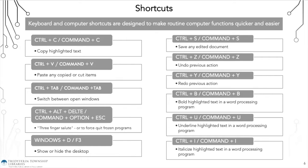Control+Z is a lifesaver — it undoes any previous action. Control+Y redoes your previous undo. Control+B bolds highlighted text, Control+U underlines highlighted text, and Control+I italicizes highlighted text. These last three are primarily used in word processing programs.